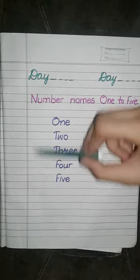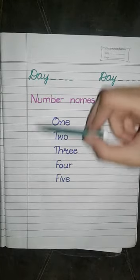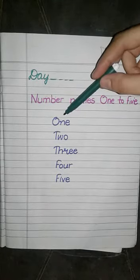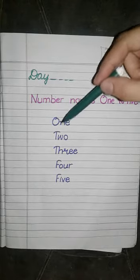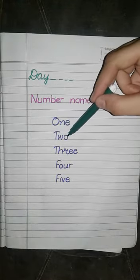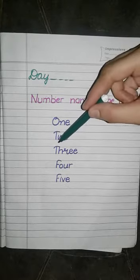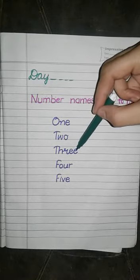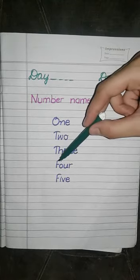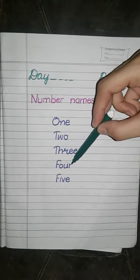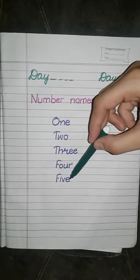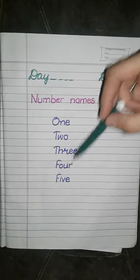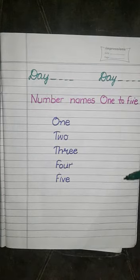One to five. So we are going to start writing O-N-E one, T-W-O two, T-H-R-E-E three, F-O-U-R four, F-I-V-E five. This way we are going to start writing one to five number names.